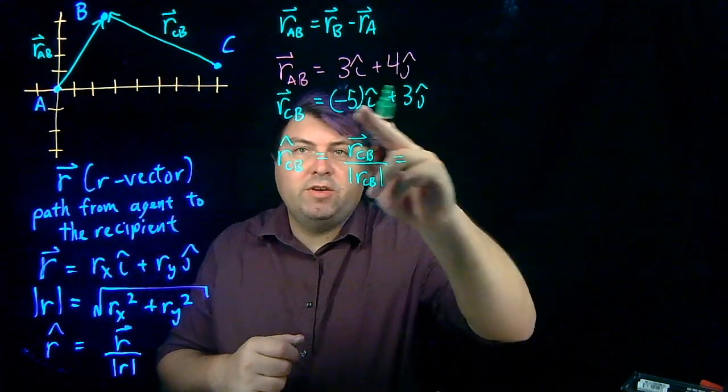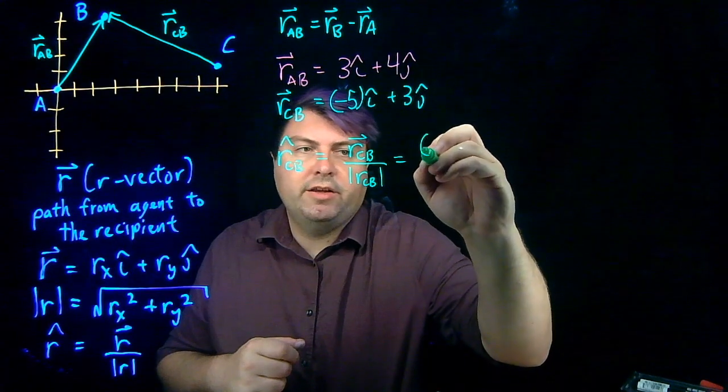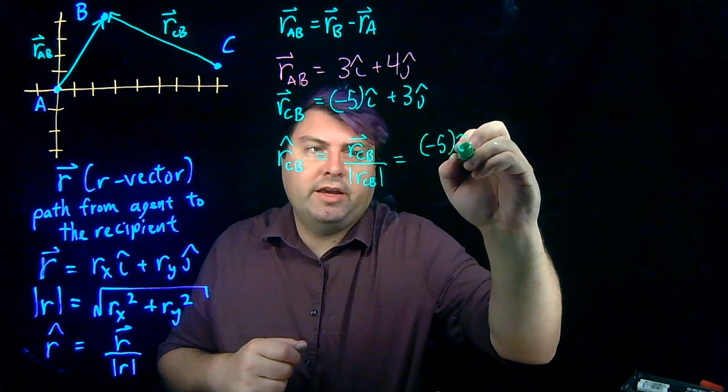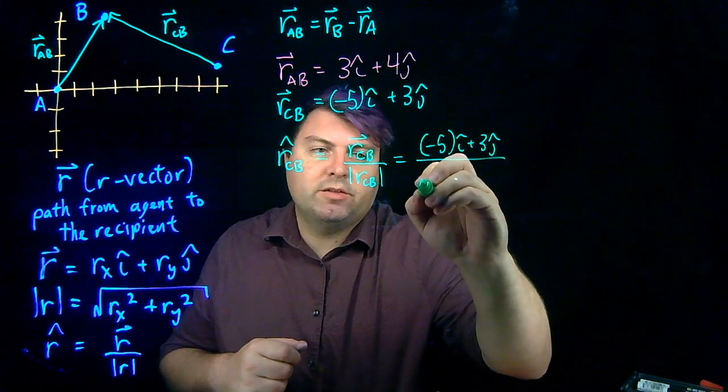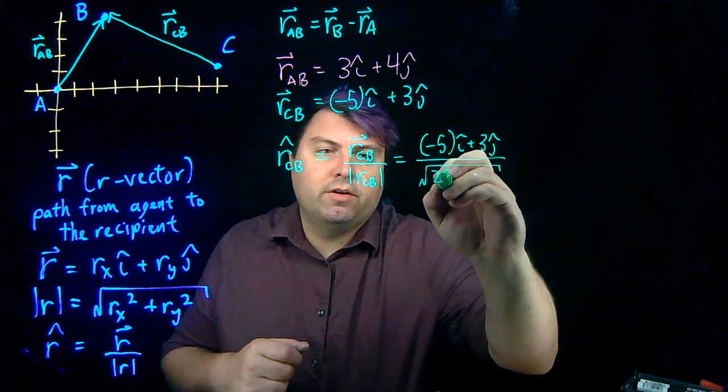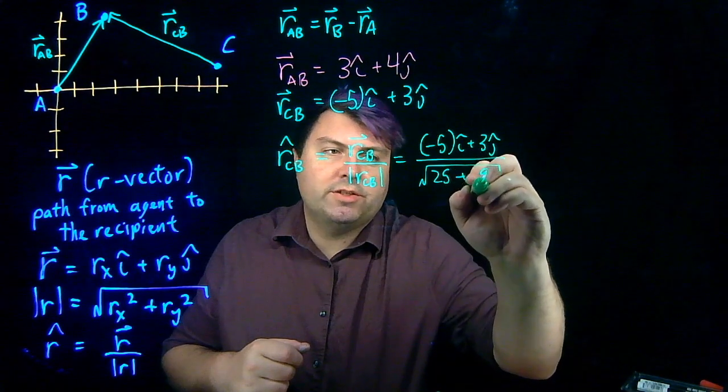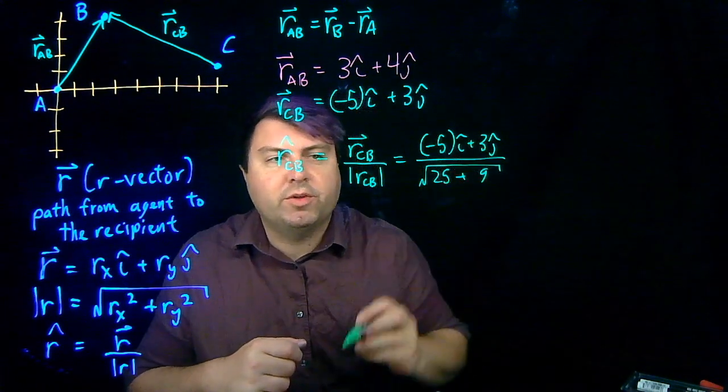So r-CB vector, we just write out what we had, negative 5 i-hat plus 3 j-hat over our r-CB magnitude, so that's going to be the square root of 25 plus 9, 5 squared plus 3 squared.